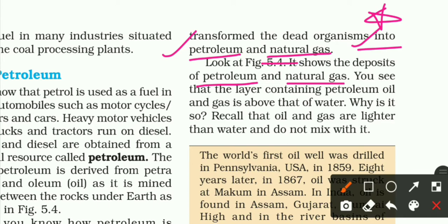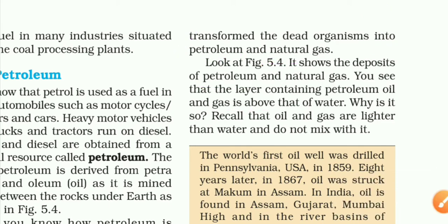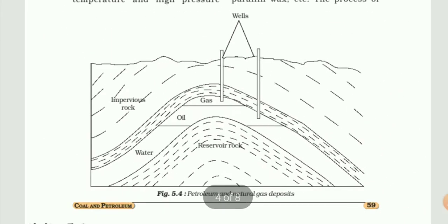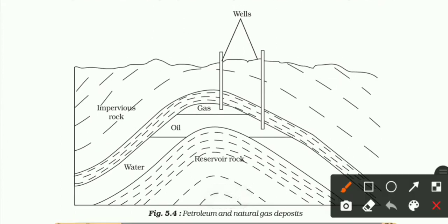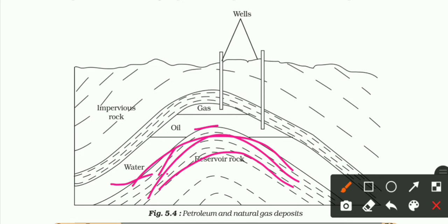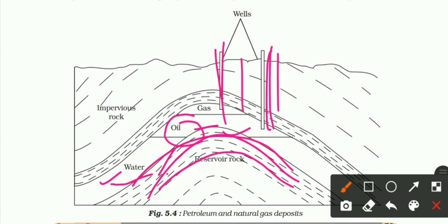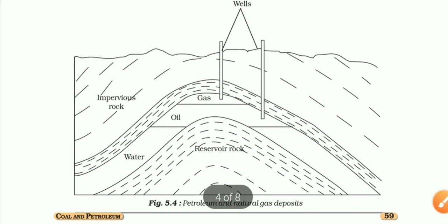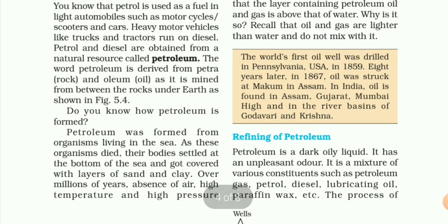Yahan par ek diagram aapko given hai (diagram 5.4). You see that the layer containing petroleum, oil and gases is above that of water. Is diagram mein alag-alag layers dikhri hain — water ki aur oil ki. Ye hai humara petroleum and natural gases deposit, ye chattane hain (rocks), aur inke beech mein water hai aur yeh oil hai. Oil alag dikhta hai kyunki jo oil hota hai, woh float karta hai water pe. Yeh kooe khodhe jate hain aur is tarah in wells se oil ko alag kar liya jata hai.